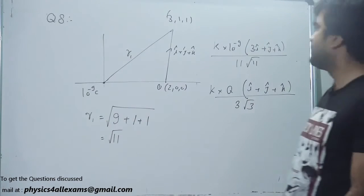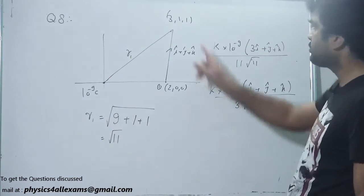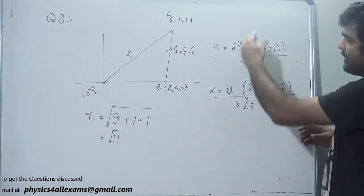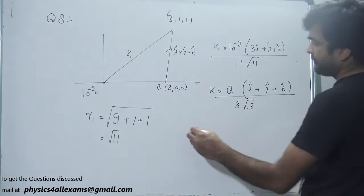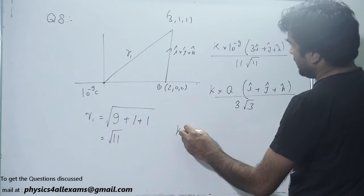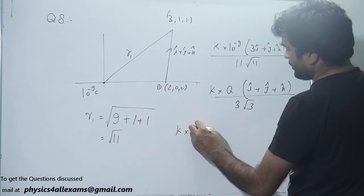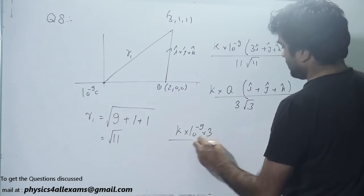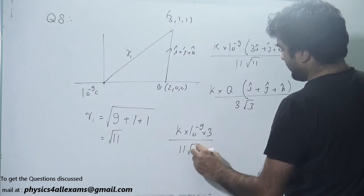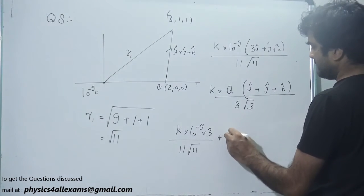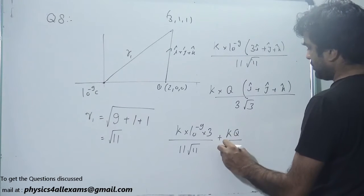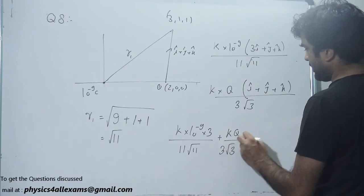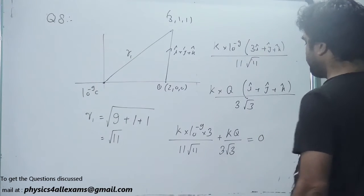Now it is given that x-component of net electric field at this point is 0. So if we add the x-component we will have K into 10 to power minus 9 into 3 upon 11 root 11 plus K Q upon 3 root 3 will be equal to 0.